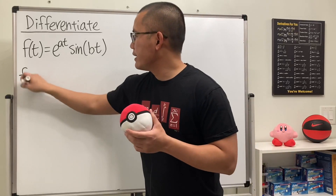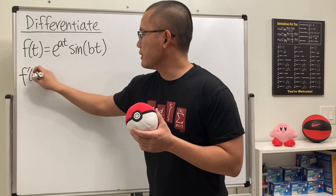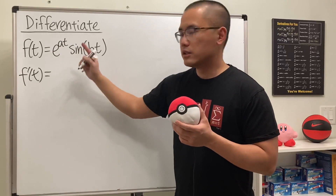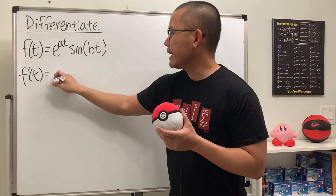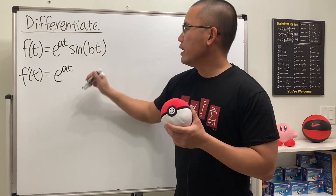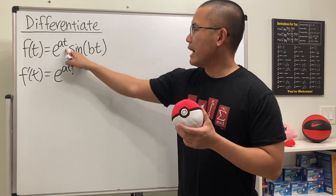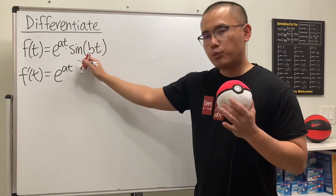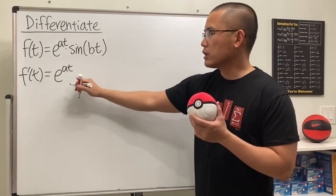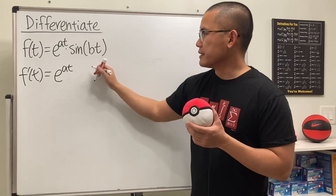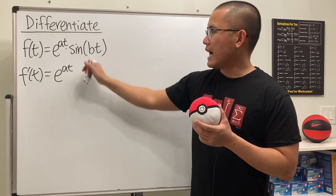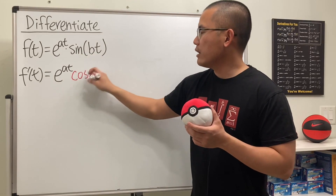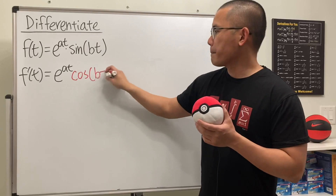So f prime of t — this is our first function, so we first keep that. We have e to the at and we multiply by the derivative of the second part. The product rule says we multiply by the derivative of the second: the derivative of sine is cosine, so let me write that down. The input stays the same.